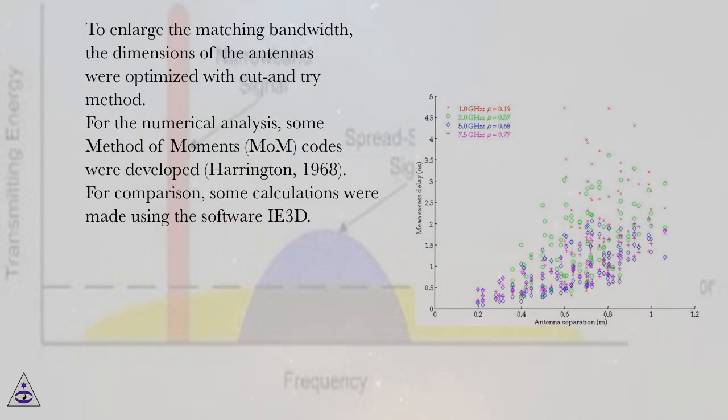To enlarge the matching bandwidth, the dimensions of the antennas were optimized with cut-and-try method. For the numerical analysis, some Method of Moments (MoM) codes were developed (Harrington, 1968). For comparison, some calculations were made using the software IE3D.